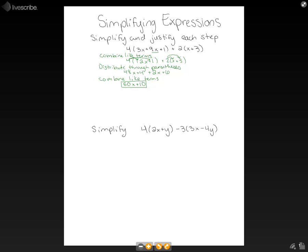Now let's do a little bit of a different problem where we simplify 4 times 2x plus y minus 3 times 3x minus 4y. So we have two different variables down here. So our first step is going to be to distribute.